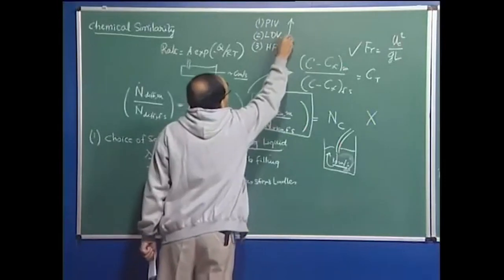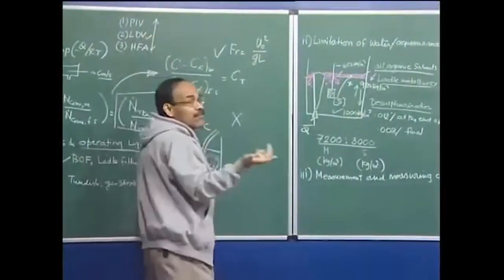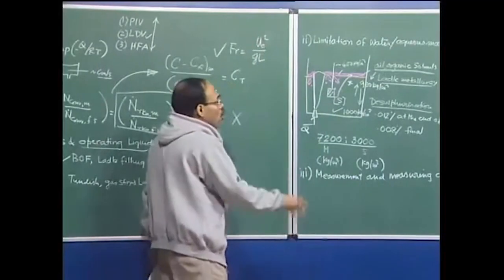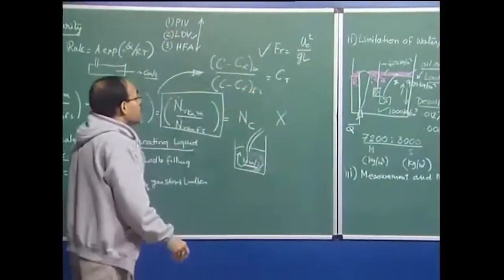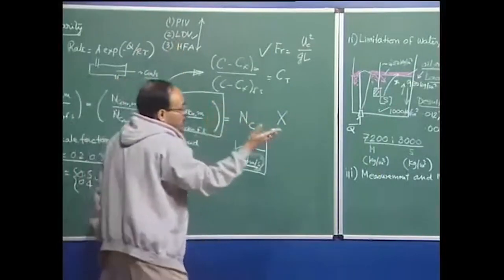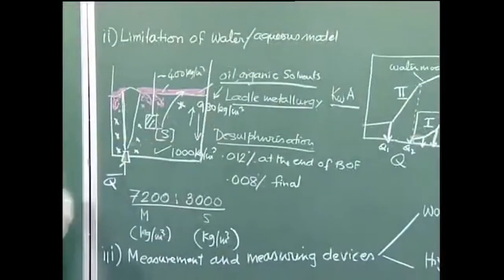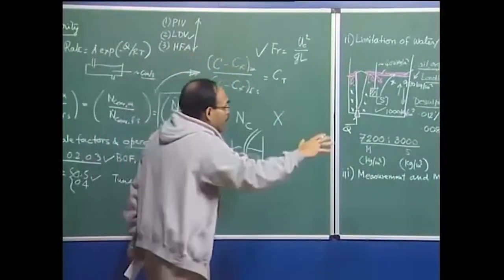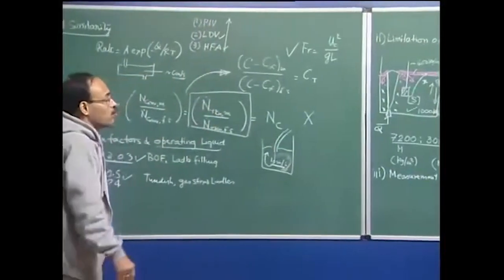Hot film anemometer and LDV are essentially point-by-point measuring techniques, which means we measure velocity point by point. On the other hand, PIV — in 2D or 3D form — can map a plane in one shot, or map the 3D flow pattern in the system in one go. This is a very quick method of mapping the entire flow field. For LDV, you have to move the equipment from one point to another to make measurements, and you can imagine how tedious it would be to map even the velocity field in a water model.